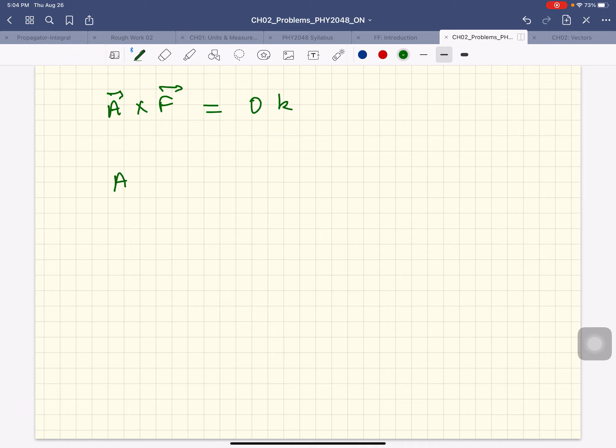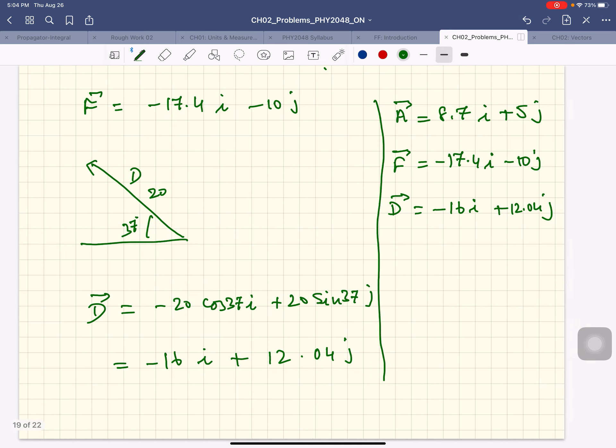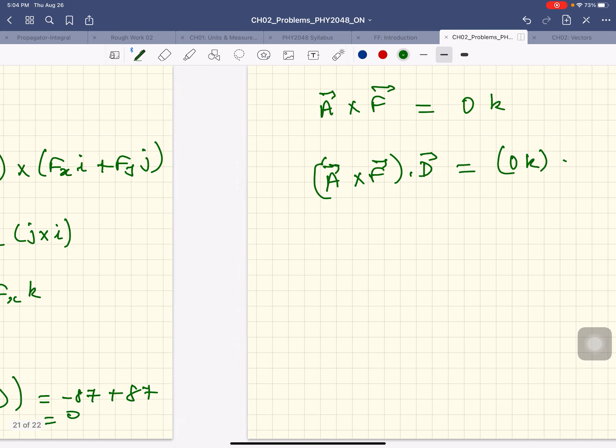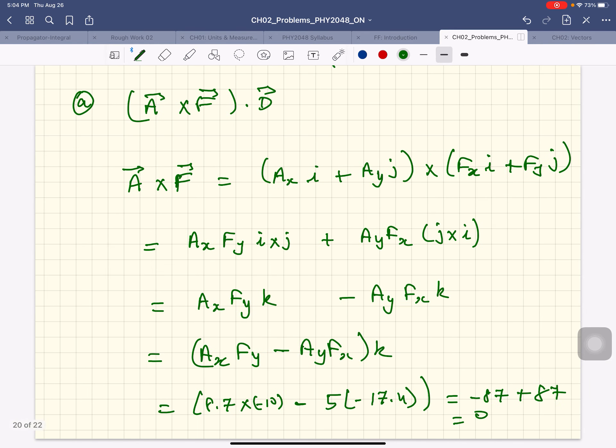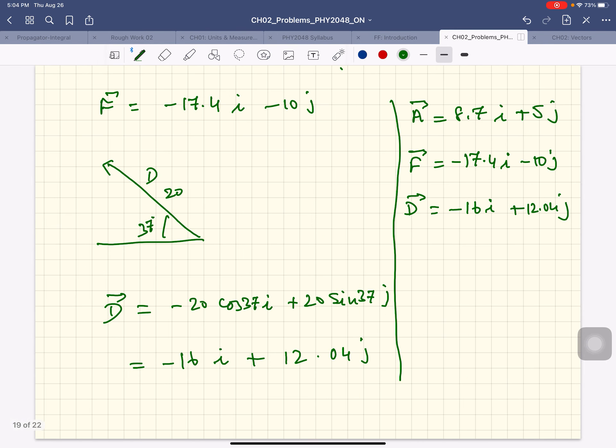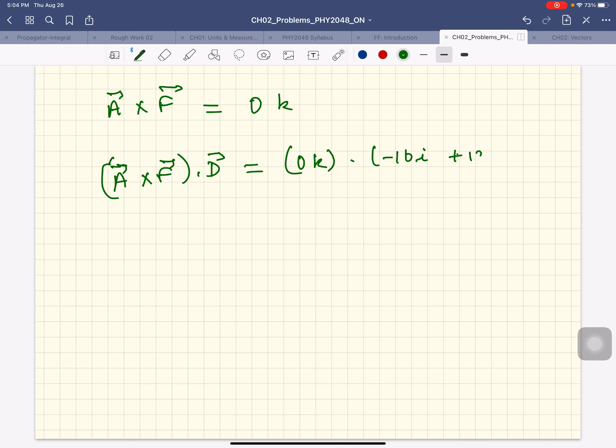And so A cross F dotted with D is zero K dotted with D. It doesn't matter—you're dotting it with a zero vector, so you'll get zero. But anyway, even if this was not zero, K dot I would be zero and K dot J would be zero.